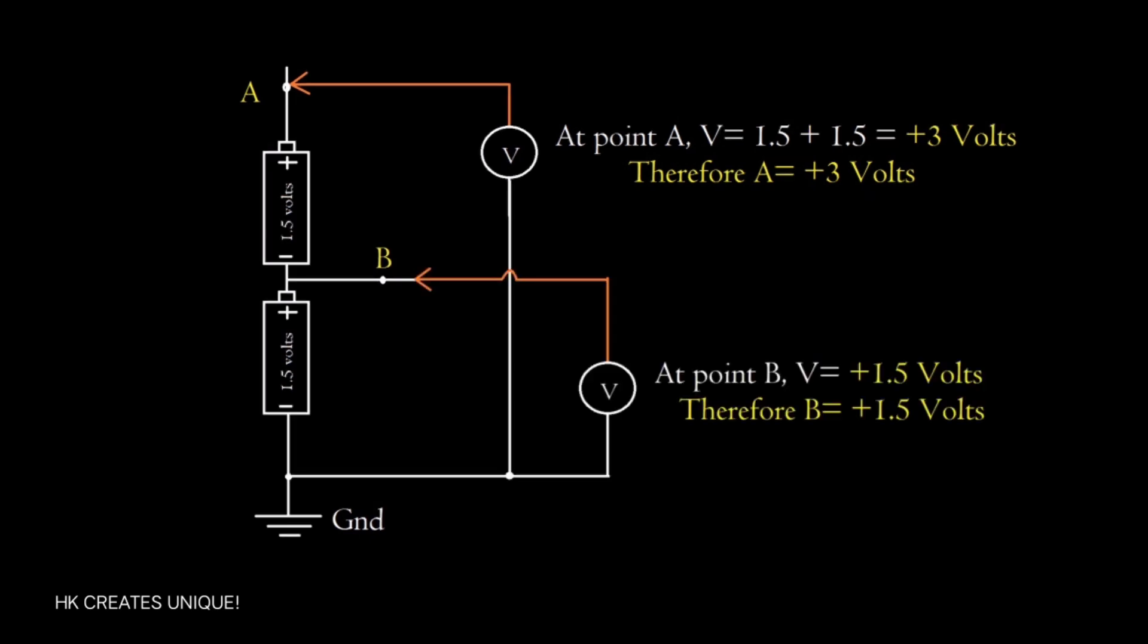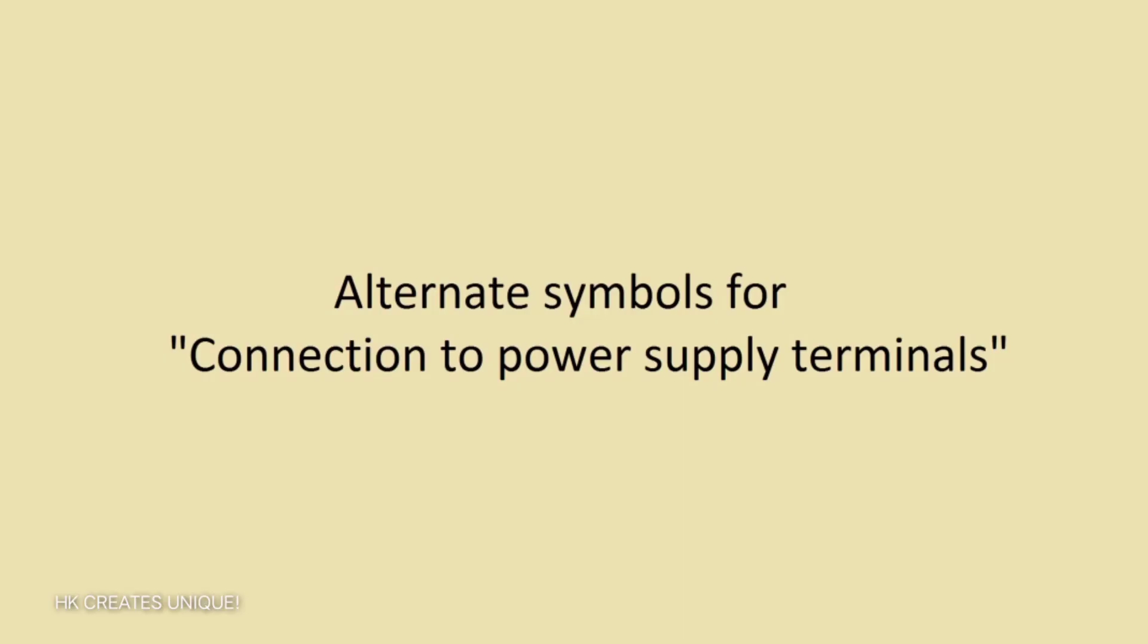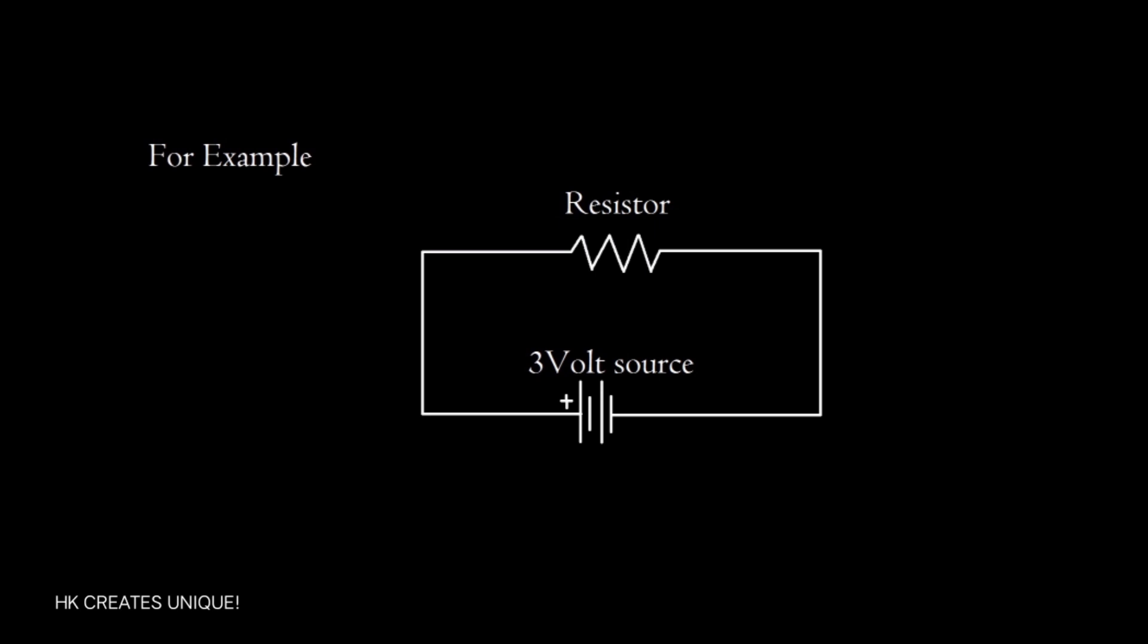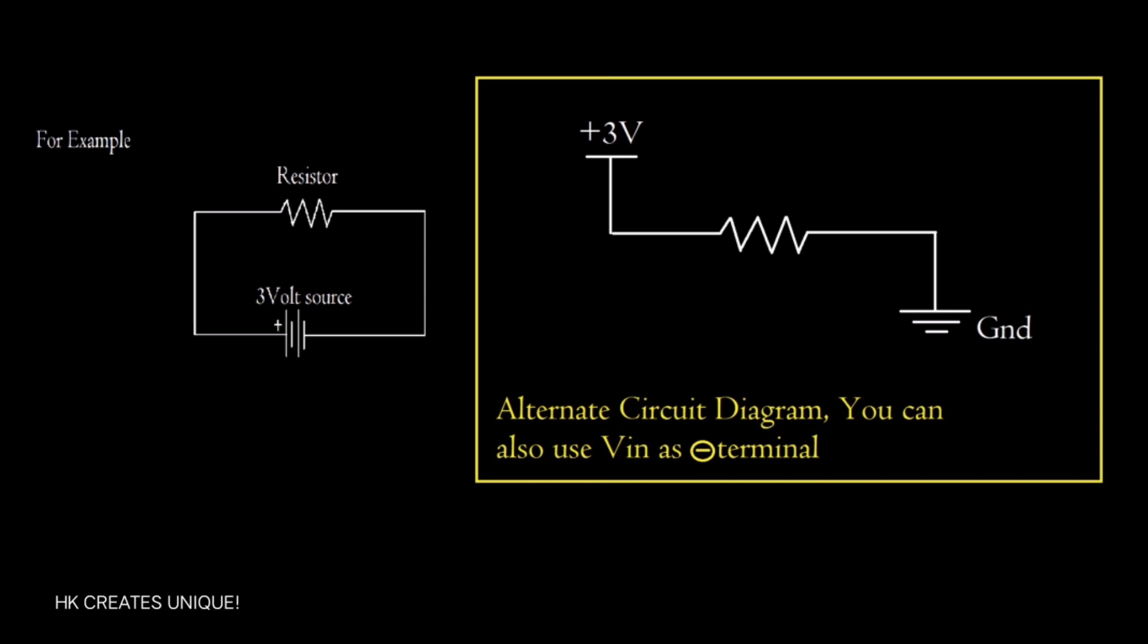In a circuit diagram, you can use these symbols to represent connection to power supply terminals. For example, a resistor connected with a 3 volt power supply can also be drawn like this.